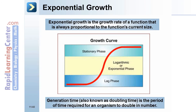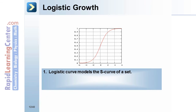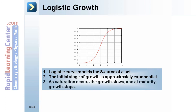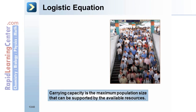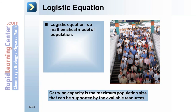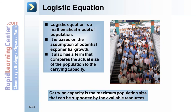Logistic growth follows an S-curve model: the initial stages of growth are approximately exponential, but as saturation occurs the growth slows, and at maturity growth stops. One universal prediction of the logistic model is that no population can grow indefinitely. Carrying capacity is the maximum population size that can be supported by available resources. The logistic equation is a mathematical model based on the assumption of potential exponential growth, with a term that compares the actual size of the population to the carrying capacity.